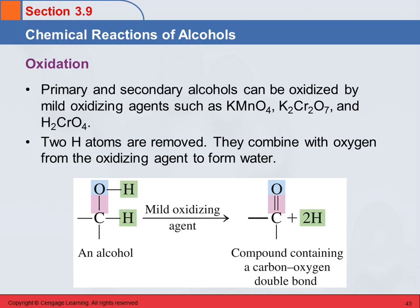Primary and secondary alcohols can be oxidized using mild oxidizing agents. Examples of these are potassium permanganate, potassium dichromate, and chromic acid. When an alcohol is oxidized, two hydrogen atoms are removed, and they combine with oxygen to form water as one of the products.